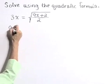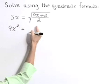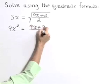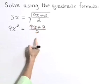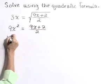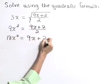Square the left to get 9x squared. Square the right to eliminate the radical, giving 9x plus 2 all over 2. Next, multiply both sides by 2 to get rid of this denominator. That gives 18x squared is equal to 9x plus 2.